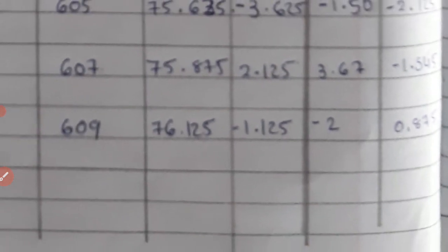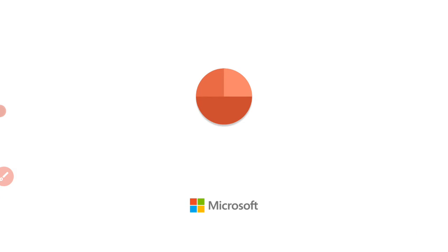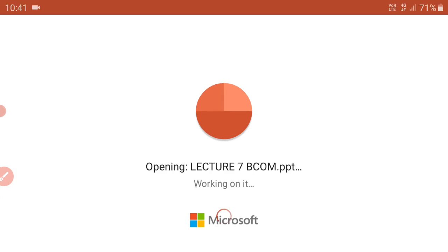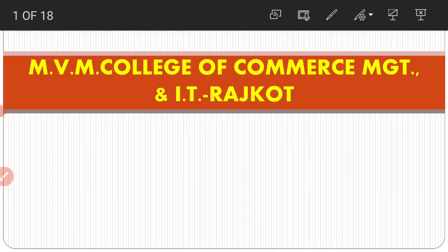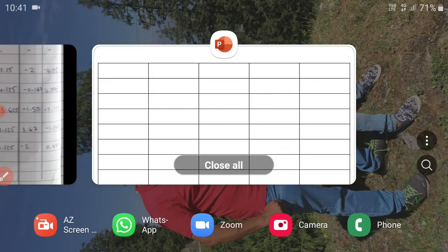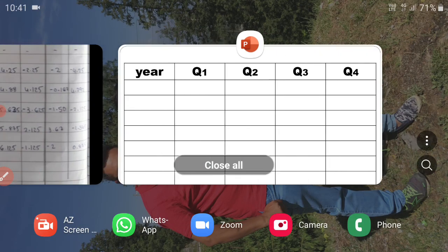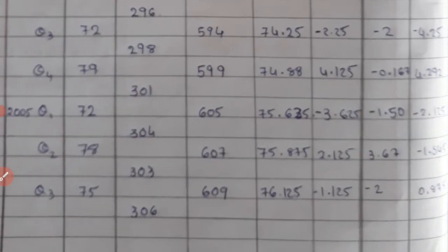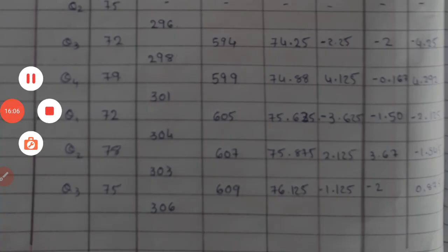Calculate irregular variations to complete the method. If all calculations are done correctly, errors in plus/minus signs can occur, so be careful. Check your answers and from the book, find illustrations and exercise questions on irregular variations. Do the homework lessons and practice. Thank you very much.